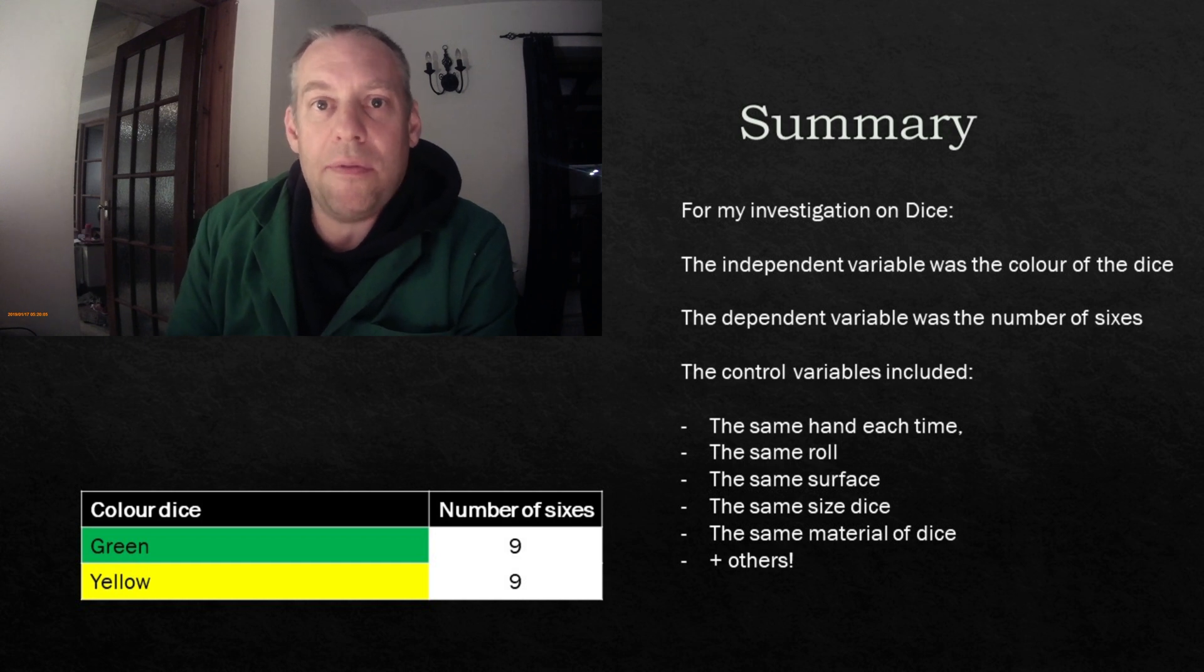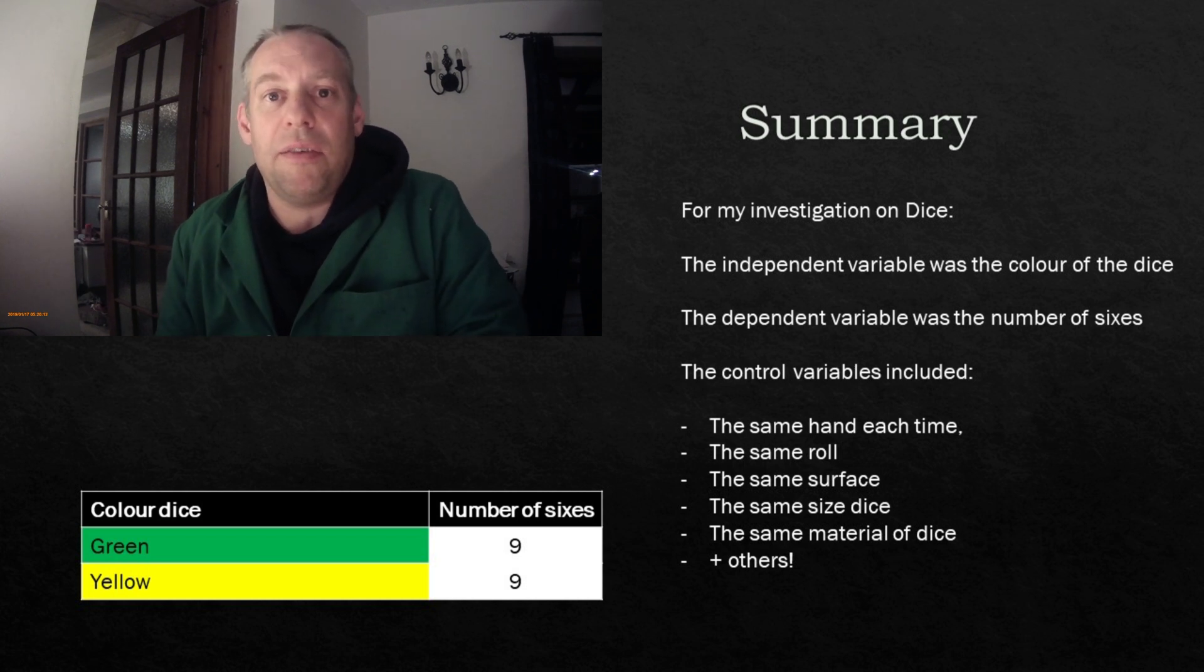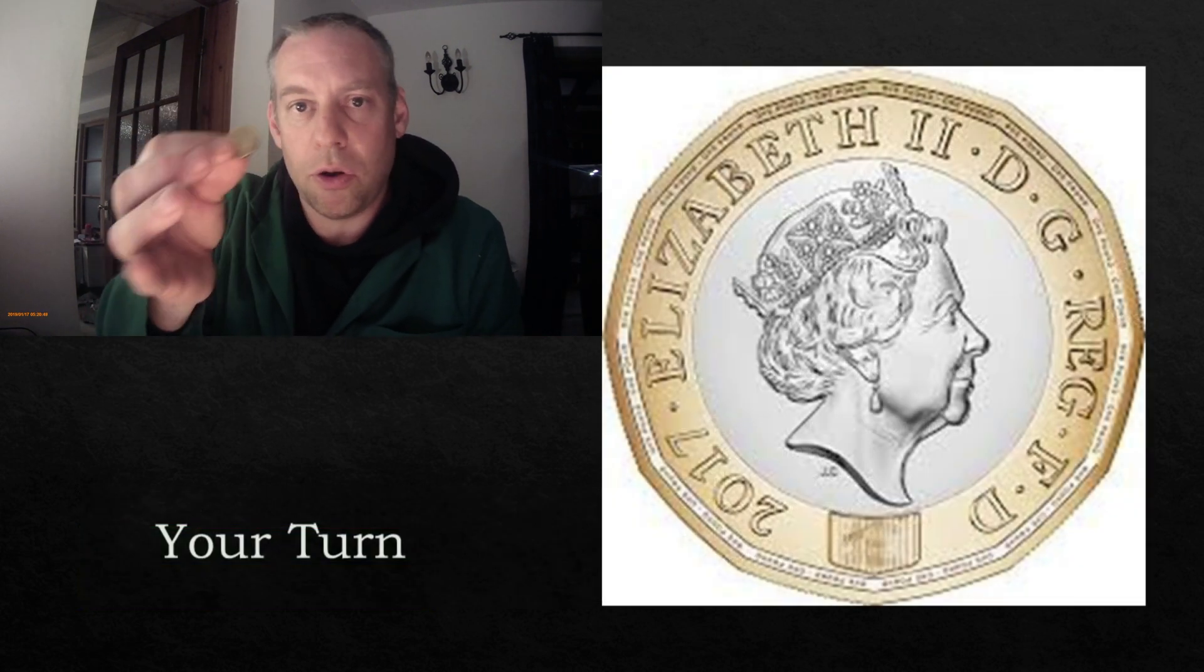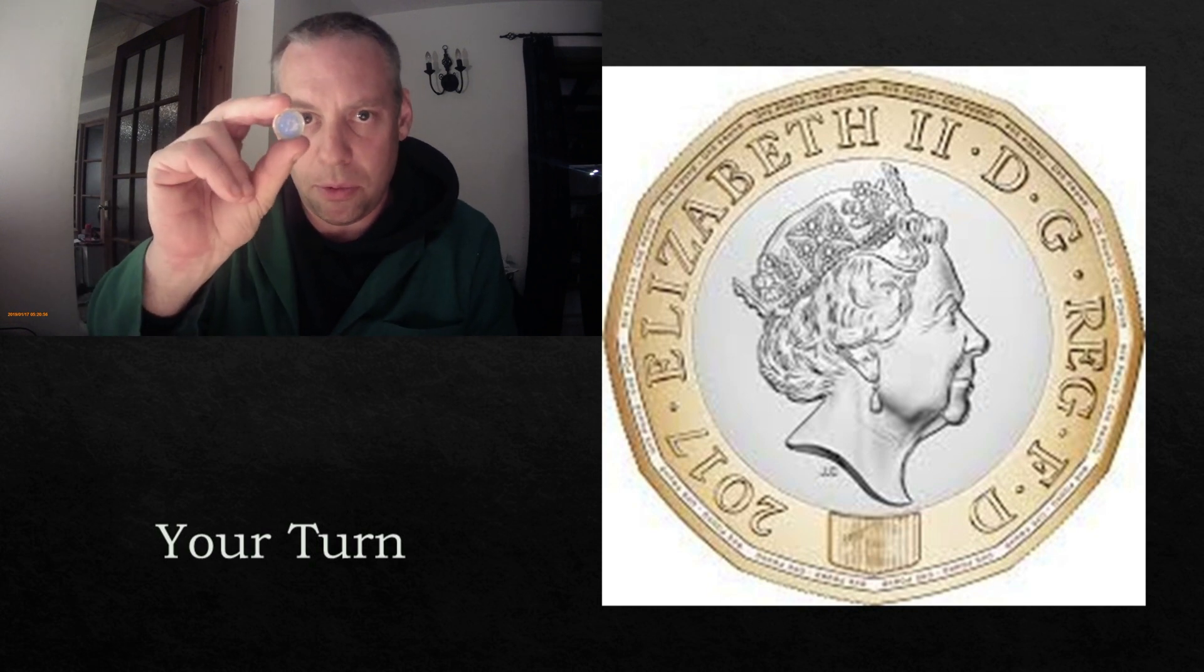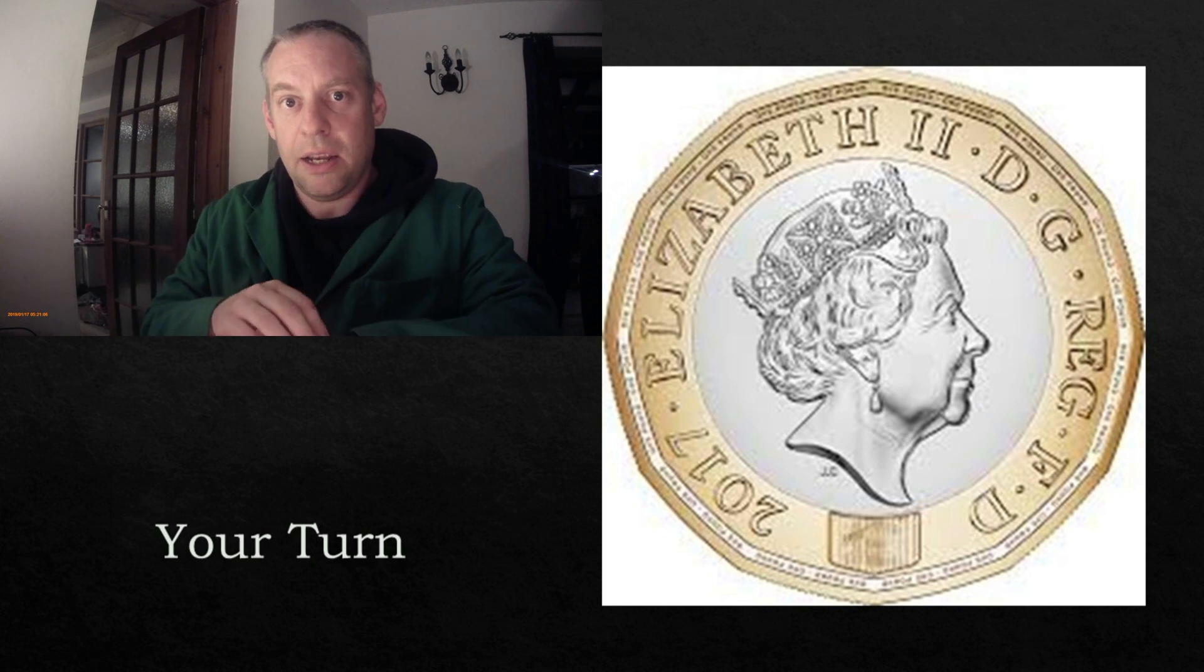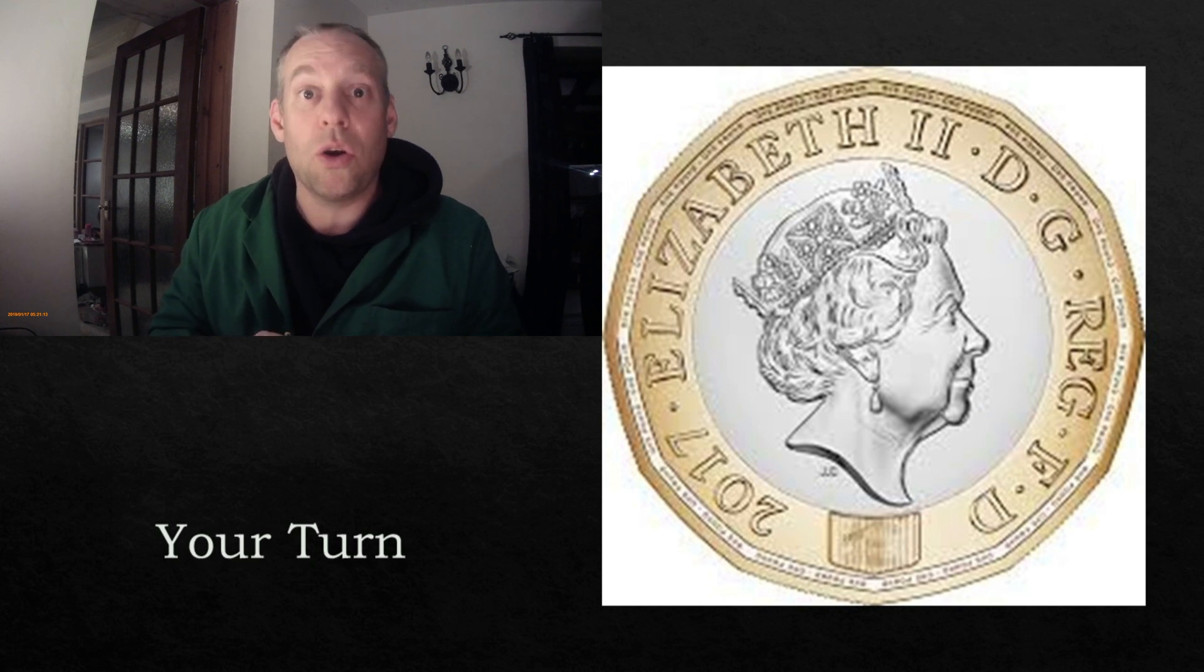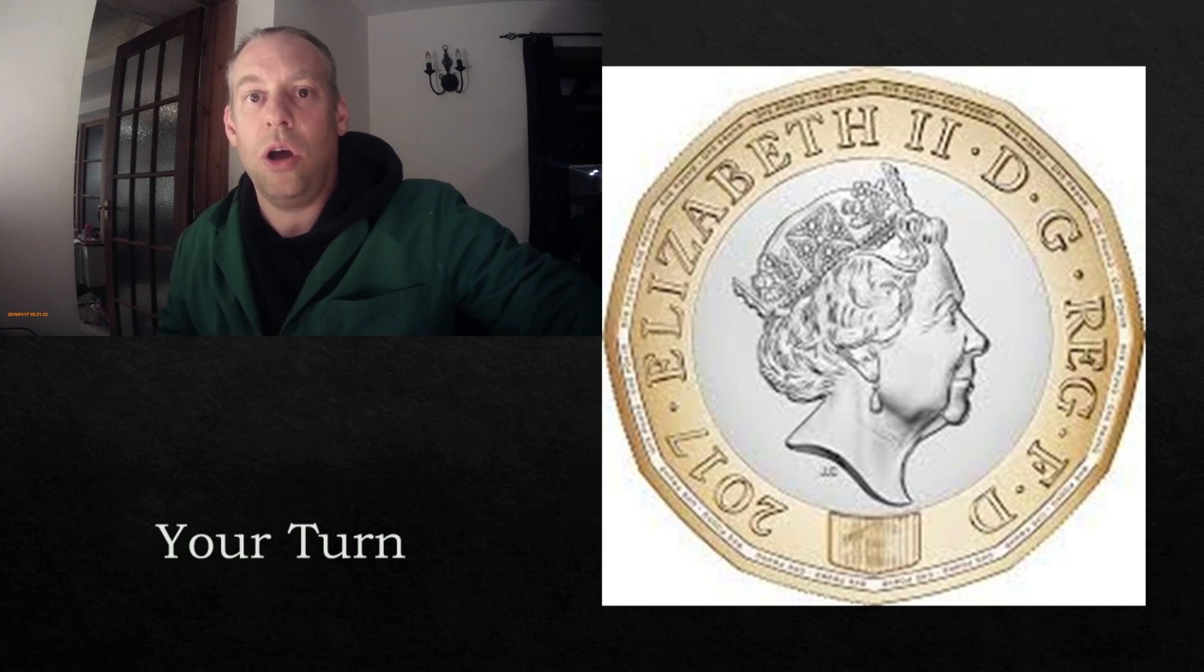Now, I want you to have a go at this, and I want you to work out dependent, independent, and control variables. And to do this, I'm going to give you a very easy investigation to do. What I'm going to ask you to do is to take coins. One coin, it could be different coins, I don't mind. The choice is completely up to you. Like I did at the start of this video, I want you to find out all the variables that change whether this is a head or a tail. Now, I want you to decide all those variables, and then pick one that you wish to investigate. And I want you to call that your independent variable.